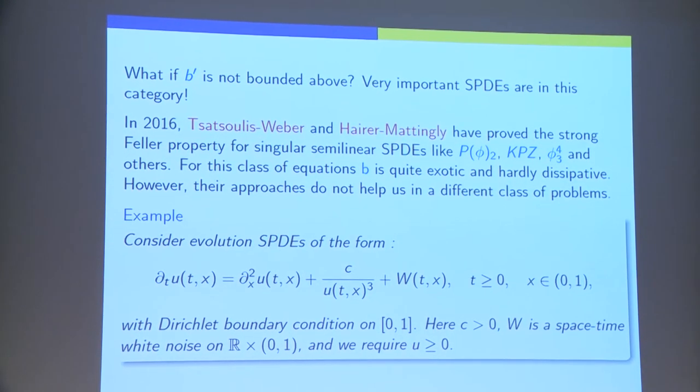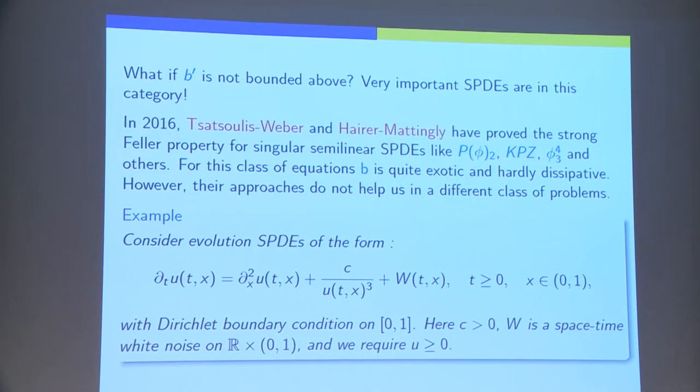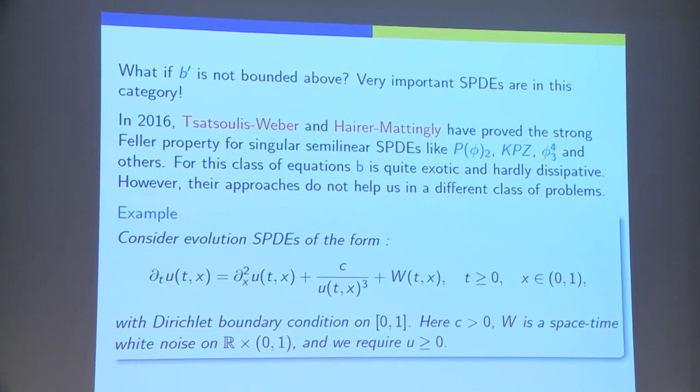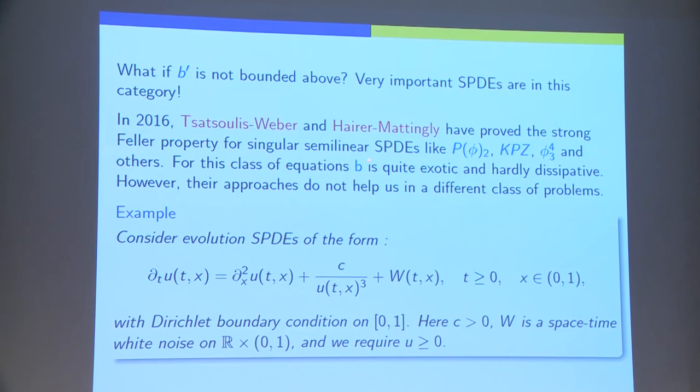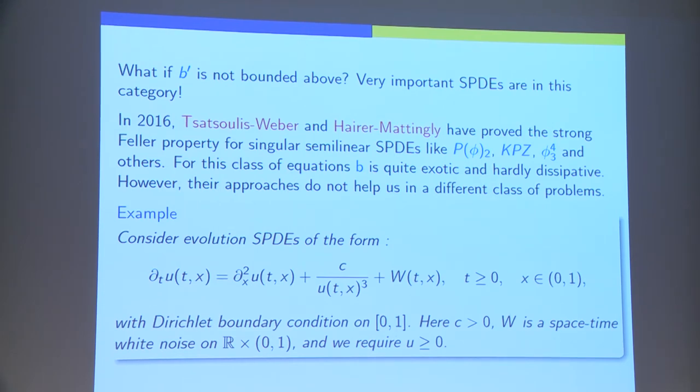Because there are very important SPDEs where this assumption does not hold. Last year, there were two articles about some semi-linear SPDEs that have very exotic drift term B, that is hardly dissipative. So, this means that the bound that I gave above was really not satisfied. And, so these authors proved that, nevertheless, there was a strong Feller property. Although, they did not prove a Bismut-Elworthy-Li formula. But, they used methods close in spirit to the Bismut-Elworthy-Li formula.